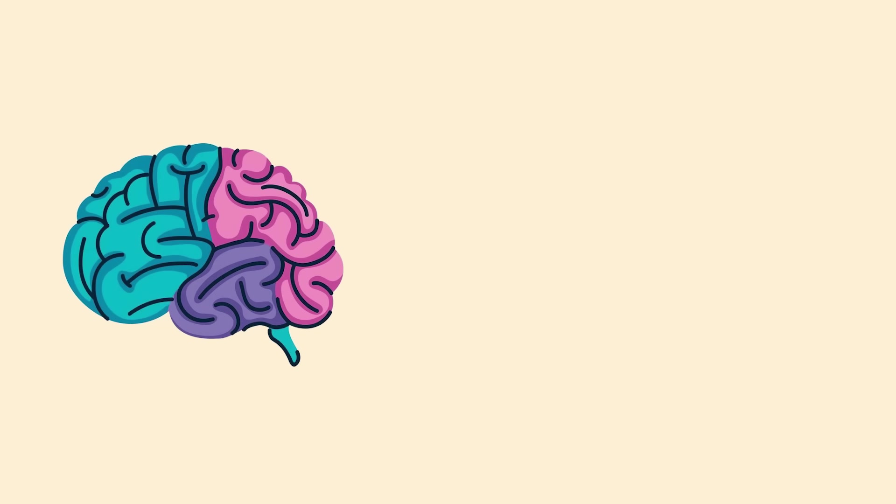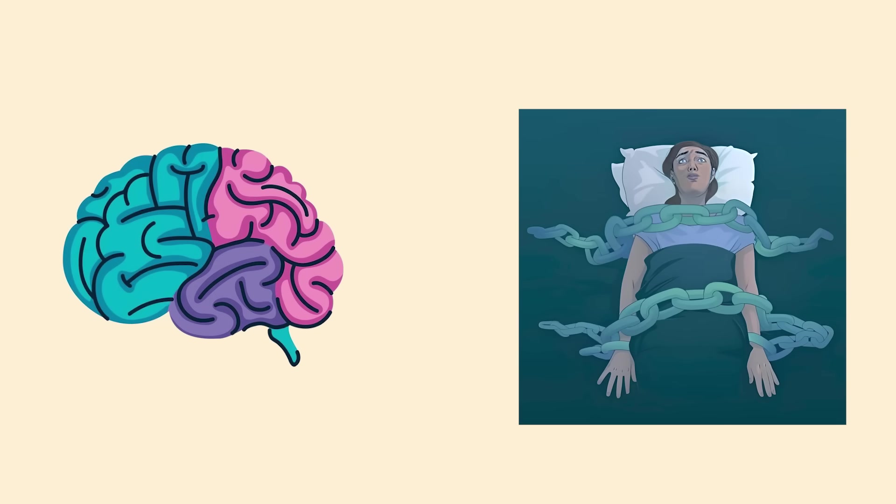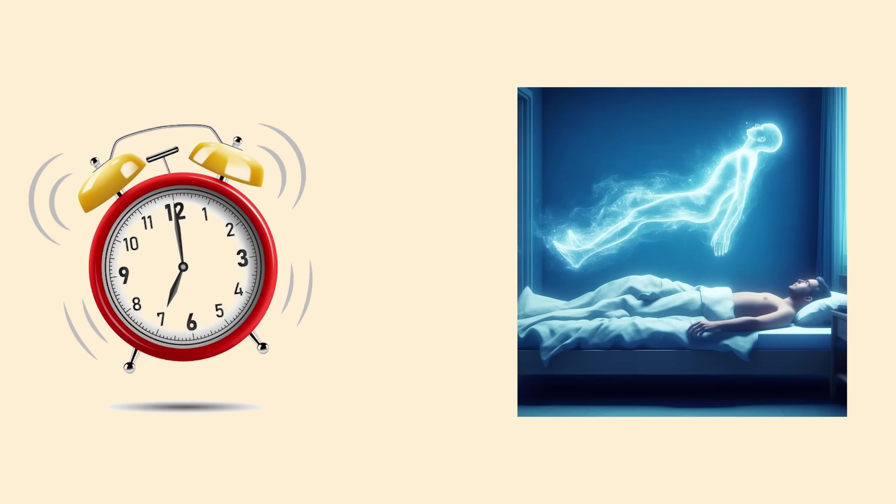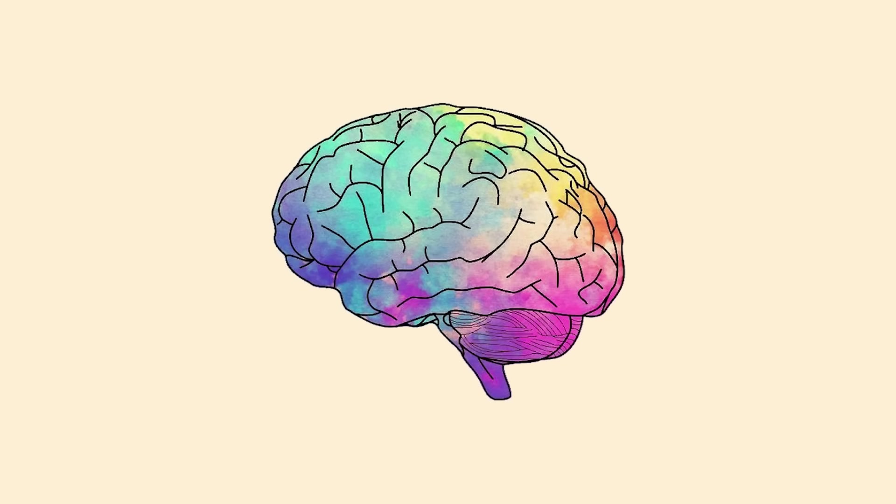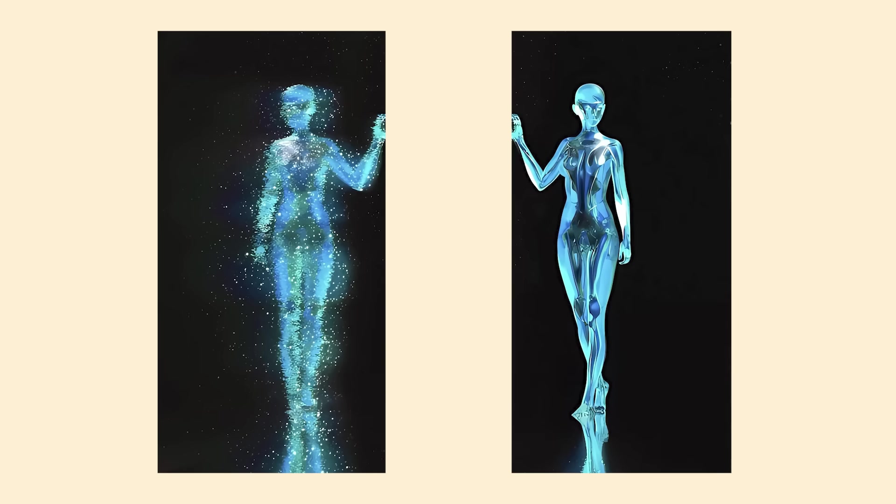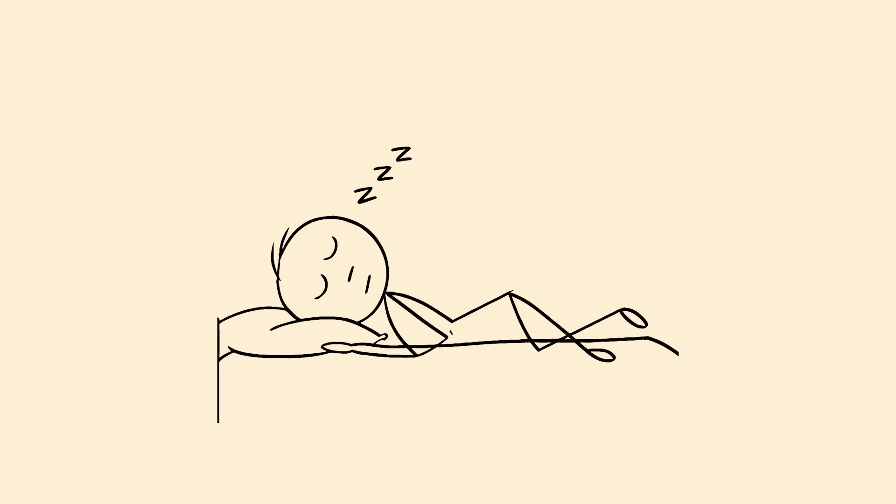During REM sleep, your brain paralyzes your muscles to stop you from acting out dreams. Sometimes the timing gets messed up and you become conscious while still paralyzed. The hallucinations happen because your brain is caught between dream state and reality. It's like your mind came online while your body is still sleeping.